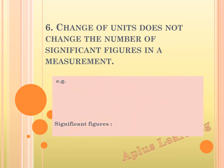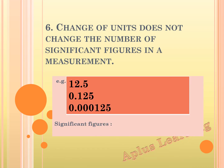The next rule: change of units does not change the number of significant figures in a measurement. Here, we will take 3 numbers: 12.5, 0.125, and 0.000125. For all 3 examples, we have 3 as the significant figure. For the first number 12.5, it is all non-zero numbers, so all 3 digits are counted. For 0.125 and 0.000125, the numbers are less than 1, so the zeros to the left of the first non-zero number are not to be counted. Here we have 3 as the significant figure.